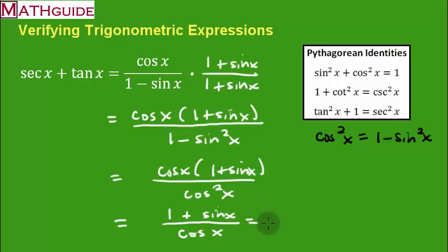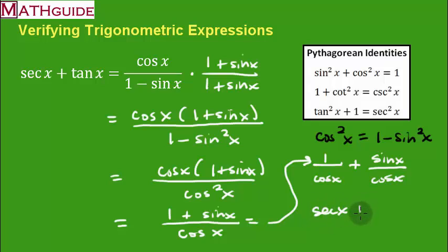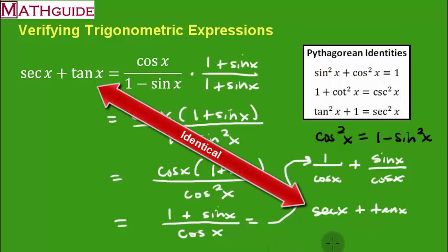I divide the whole numerator by cosine x. That gives one over cosine x — which is secant — plus sine x over cosine x — which is tangent. So we get secant plus tangent, which is exactly the left-hand side, and the identity is verified.